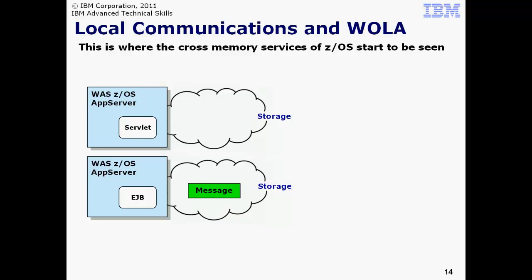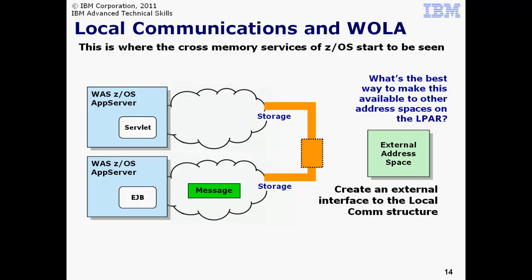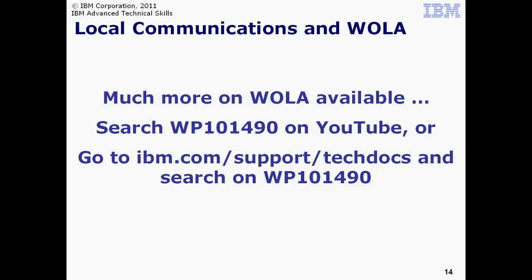There's no invocation of the TCP stack, and there's no need to serialize the message. The message is simply copied memory to memory. To represent this local communications function in an abstract way, we use this orange bar. Imagine you have an address space that's not part of WAS z/OS, and that address space wants to participate in this cross-memory service. WOLA is an externalization of the local communications function of WAS z/OS, so address spaces on the same LPAR may participate in the cross-memory services. This is a very efficient means of communication capable of achieving very high rates of throughput. And to make it as flexible as possible, WOLA is bi-directional, meaning the initiation of message exchange may start from WAS z/OS and go outbound, or start from outside WAS z/OS and come inbound. WOLA is a topic for which we already have considerable documentation available. The WP101490 document at ibm.com/support/techdocs is a repository for several documents on WOLA. We have a series of videos on WOLA available on YouTube as well. Search on the keyword string WP101490 to see the WOLA videos.